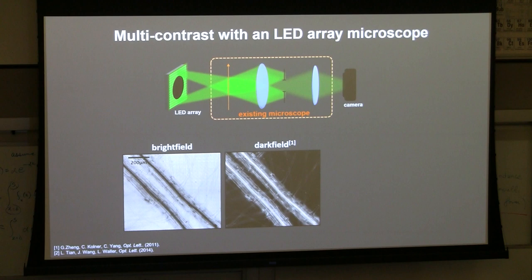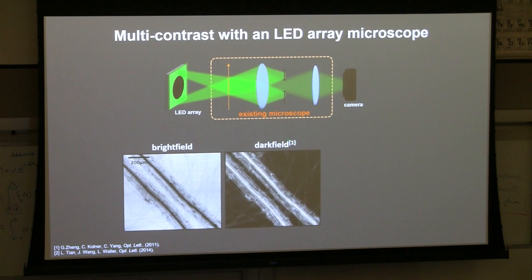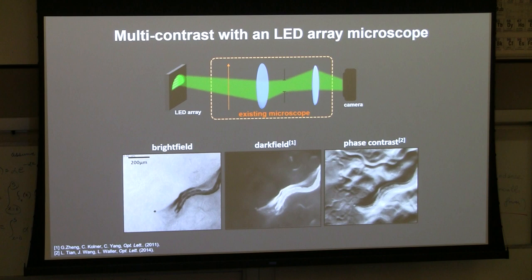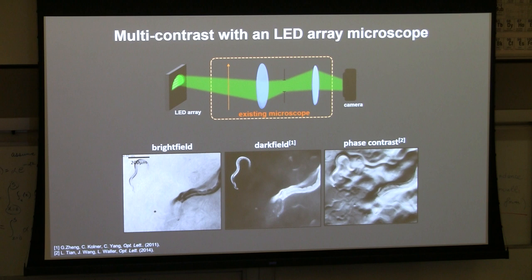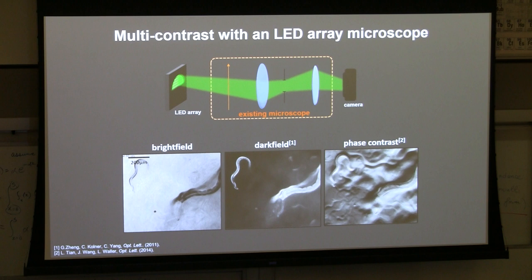By choosing different LEDs to turn on, capturing different pictures, and reconstructing with different inverse problems, we can perform a bunch of different imaging modalities from this single hardware platform. If I light up the central LEDs I get a regular bright field image representing absorption. If I light up LEDs corresponding to angles larger than the microscope's numerical aperture, only scattered light from sub-resolution features passes through — a dark field image. If I light up half the LEDs in the circle, it gives a phase contrast image with some phase information. You can quickly flip between these LED patterns and get simultaneous videos of all three — some of the most popular non-fluorescent contrast modes in microscopy that you'd normally need specialized objectives and condensers for.